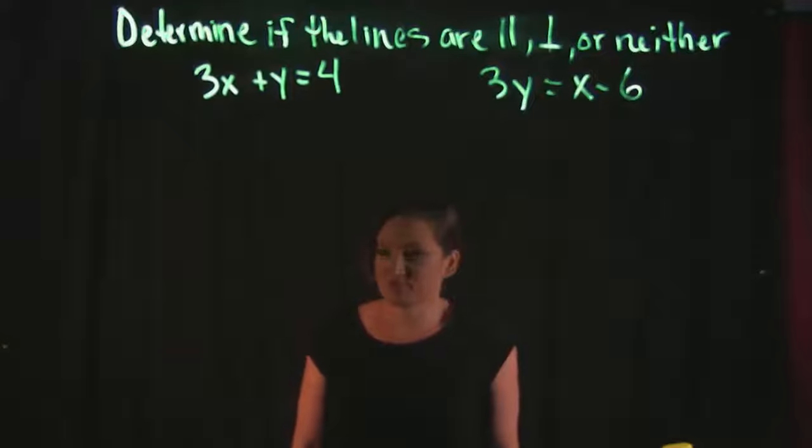Now the way that we do that is this. The test to determine if they're parallel or perpendicular has to deal with the slope of the lines. You need to compare the slope. So looking at these equations I need to figure out how to find the slope of these two lines because that's what I need to get to. The slope is the key here, that's what's going to let me know my answer.